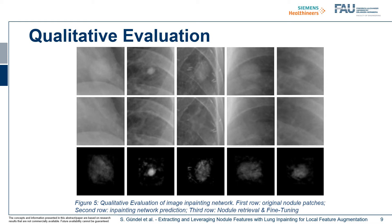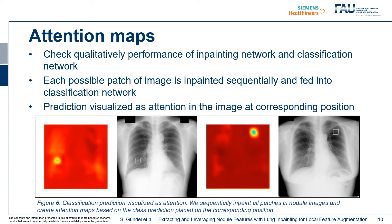We furthermore show attention maps here to check qualitatively the performance of both the in-painting network and the classification network. Each possible patch in the chest X-ray images is in-painted sequentially and fed into the classification network. The prediction of the classification network is visualized as attention in the image at the corresponding position. You can see that when the patch including the nodule is in-painted, the output is replaced and fed into the classification network, which immediately shows a very low prediction at the corresponding position.